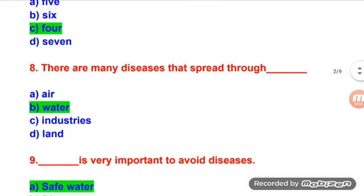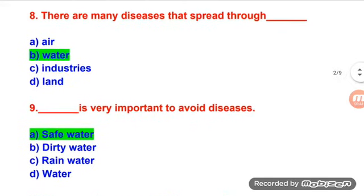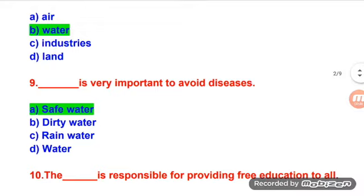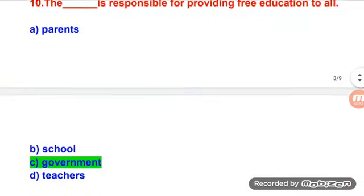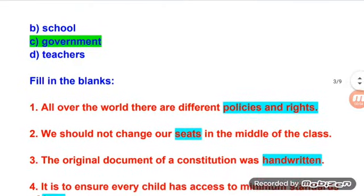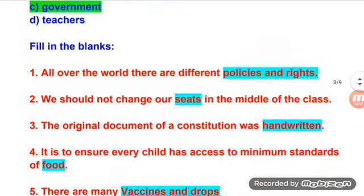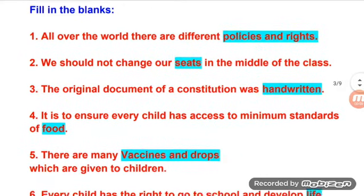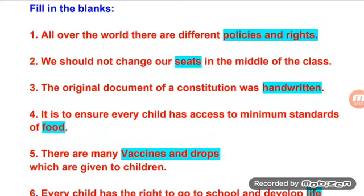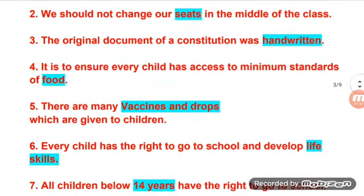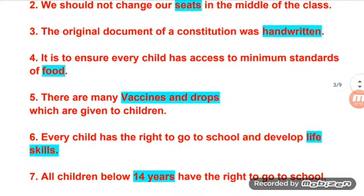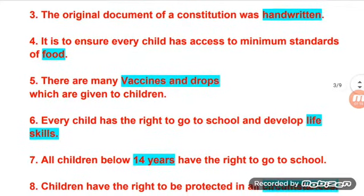There are four major child rights. There are many diseases that spread through water. Safe water is very important to avoid diseases. The government is responsible for providing free education to all. Fill in the blanks: all over the world there are different policies and rights. We should not change seats in the middle of the class. The original document of the Constitution was handwritten. It is to ensure every child has access to minimum standards of food.